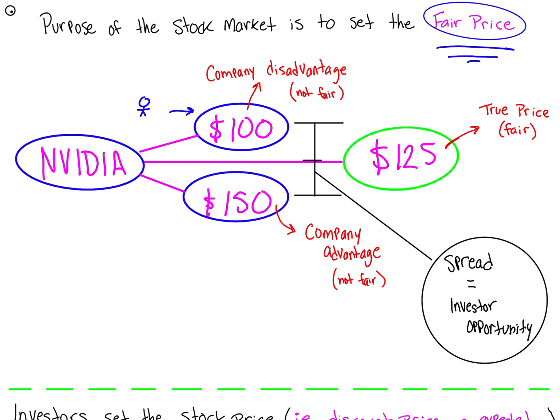The other situation is where NVIDIA is priced at $150 - this is considered a company advantage, because NVIDIA is able to sell ownership to people like us at a much higher price than what it's truly worth. The spread between $100 to $125 to $150 represents investor opportunity - this is what quants trade.